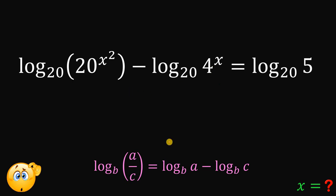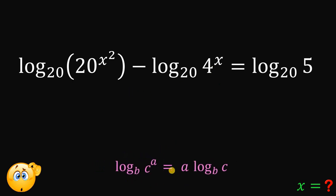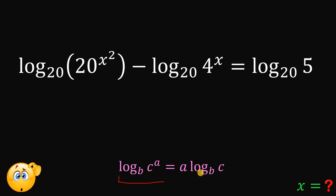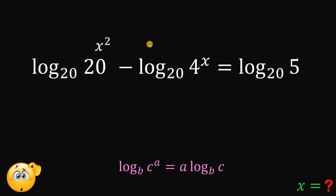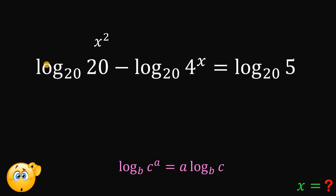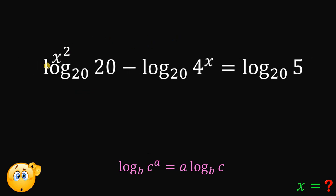Now we will use another law of logarithm. When we have logarithm of c raised to the power of a to the base b, it must equal a multiplied by logarithm of c to the base b. So we can pull out the exponent x squared and place it in front, and we can do the same thing with the exponent x.